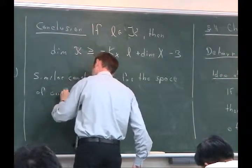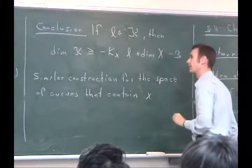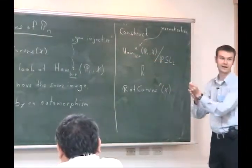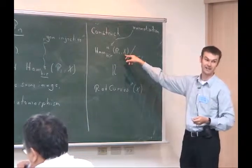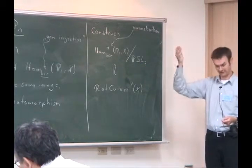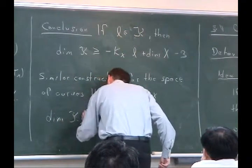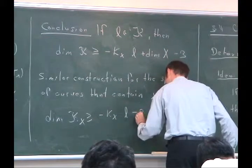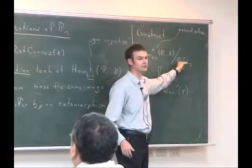For the space of curves that contain the point x, we represent it as a quotient: here in the Hom scheme we impose the additional condition that the point 0 in P1 is mapped to the point x in X. We mod out not by PSL2 but by the automorphism group that fixes the point 0. The result is that dim KX ≥ (-KX · L) - 2, the 2 being the dimension of the automorphism group that fixes one point.